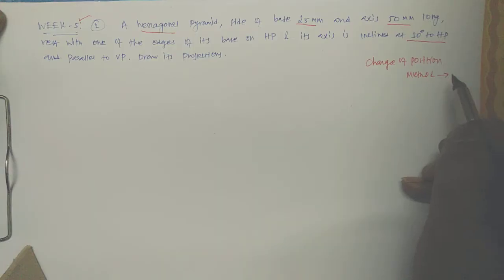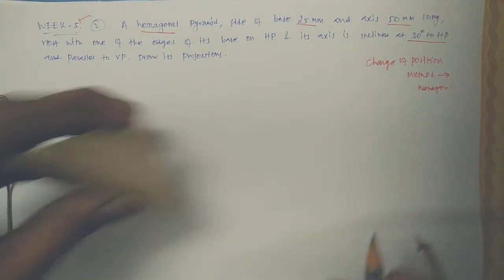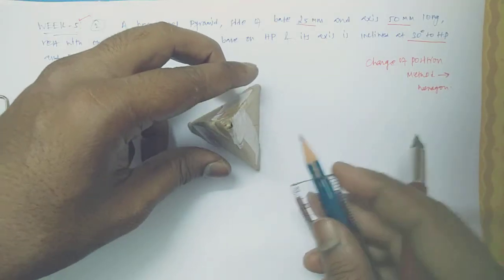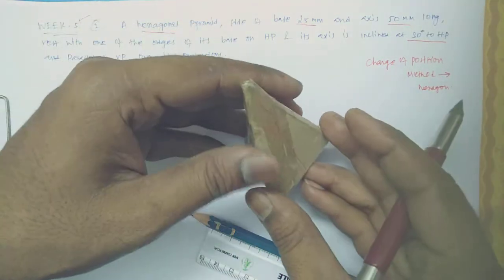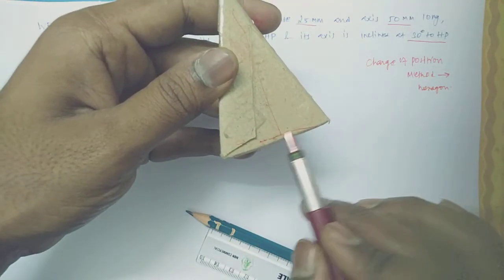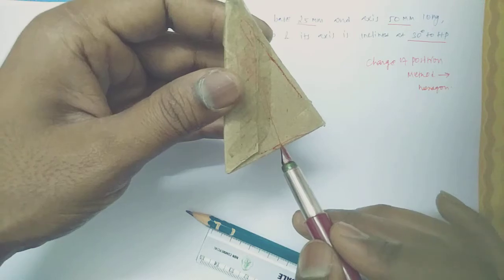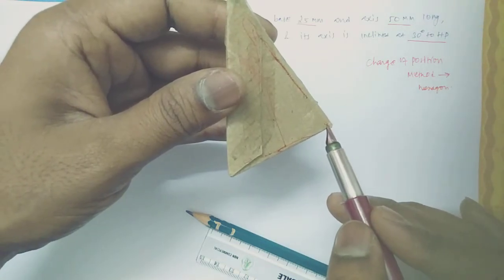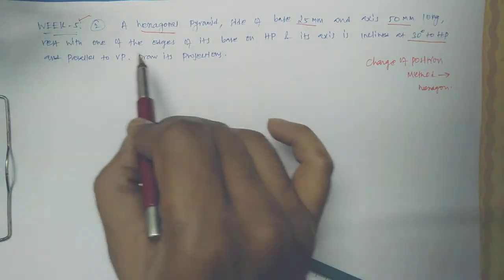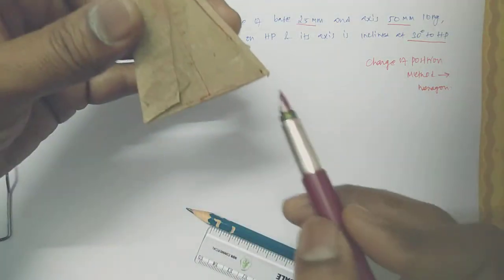We will use the change of position method to draw this hexagon. Consider this as a hexagon — it's having three faces instead of six. This is the base edge, this is an edge, this is the apex. The problem states it rests with one of its edges on the horizontal plane.